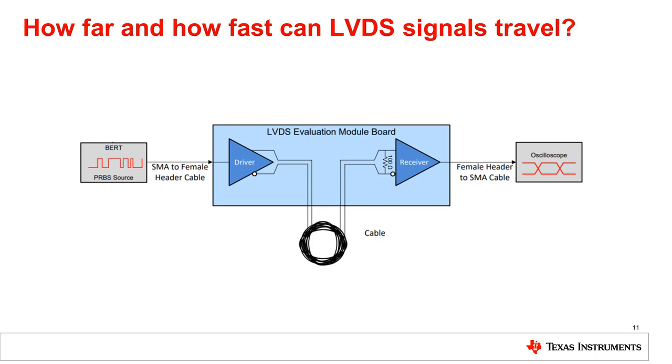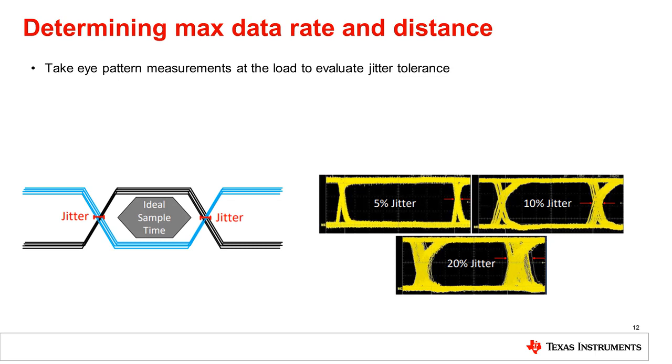The best way to determine what the actual max speed and max distance is, is to measure them in the system, either through simulation or with a prototype system. For example, a typical setup will include a BERT or function generator, EVMs, various length cables, and an oscilloscope. With the prototype setup, you can take eye diagram measurements at the load to determine the max amount of jitter allowed for error-free transmission.